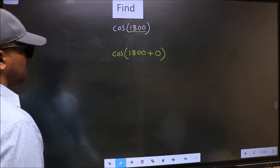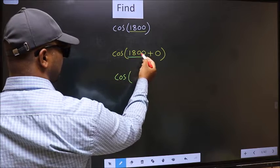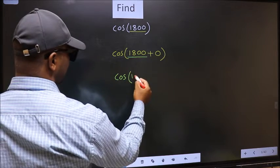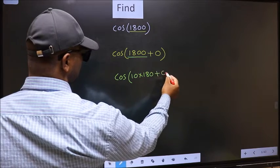Next, cos. In place of 1800, now we should write 10 into 180 plus 0.